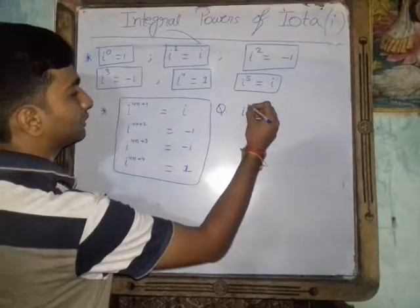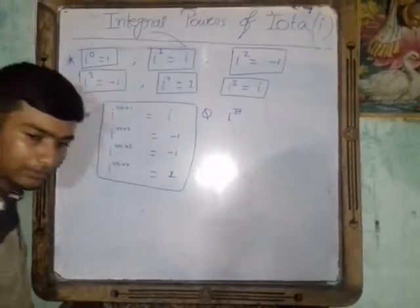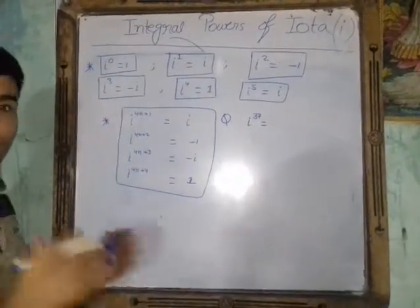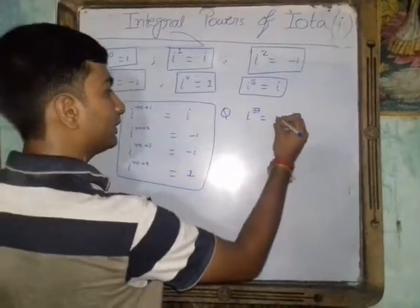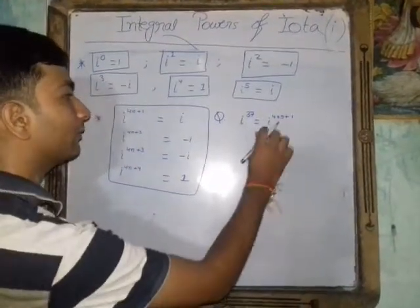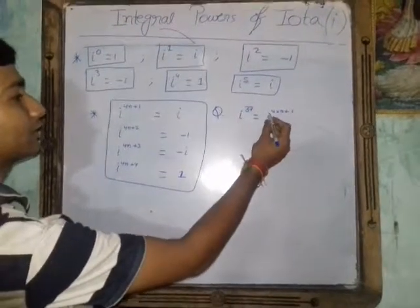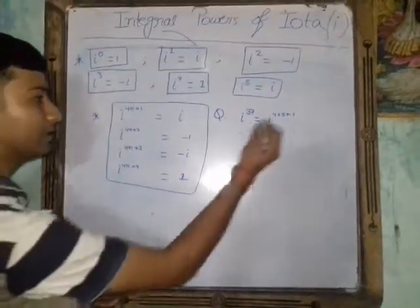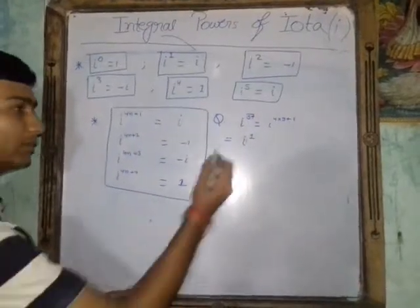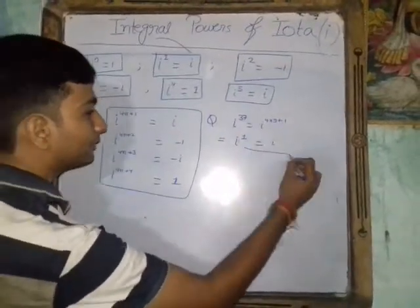Let's take the example of i to the power 37. What will be its value? We divide 37 by 4: 4 times 9 is 36, and the remainder is 1. So we write i to the power 37 as i to the power 4 times 9 plus 1. Using our rule, this simplifies to i to the power 1, which means i to the power 37 is equal to i.